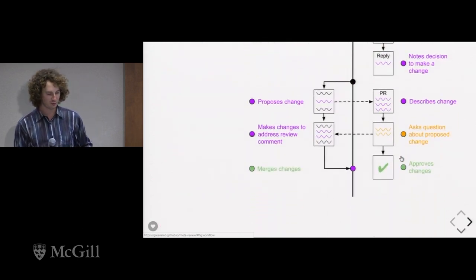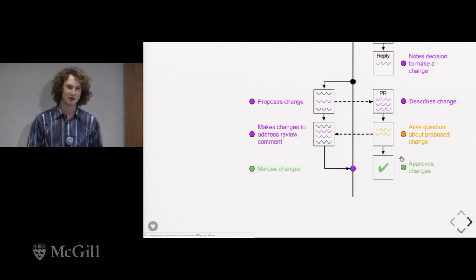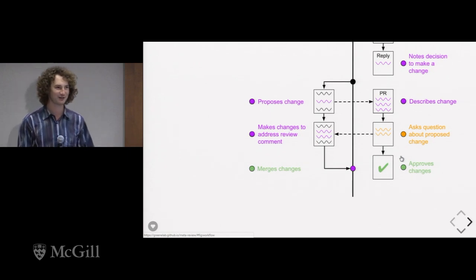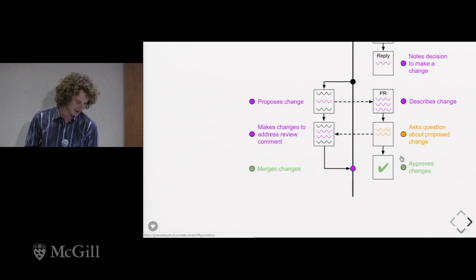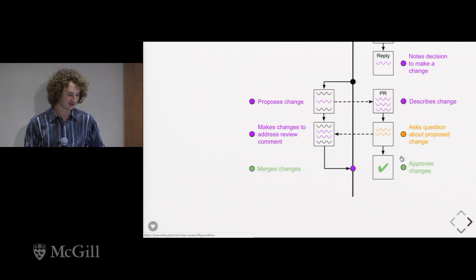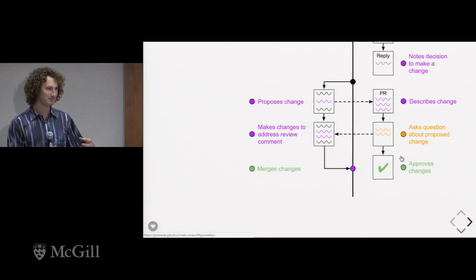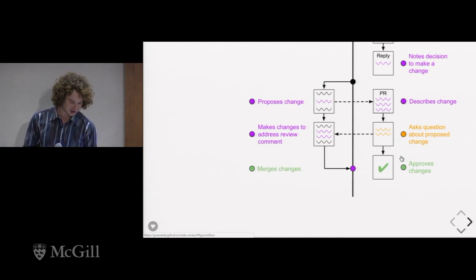The way you propose a section is through a pull request, where you're proposing to change the source of the manuscript. Oftentimes that will have several rounds of review from participants and maintainers. If all goes well, a maintainer will accept it and merge the change, at which point it becomes an official part of the manuscript, and the manuscript is rebuilt with that change included.